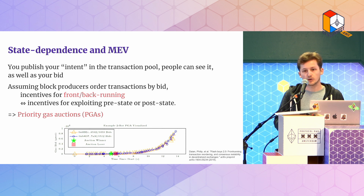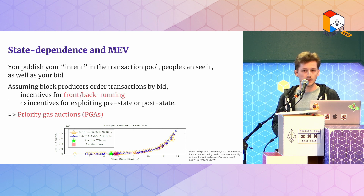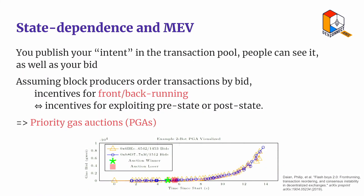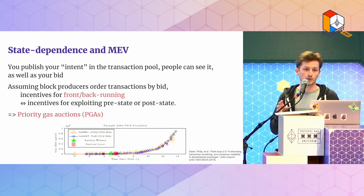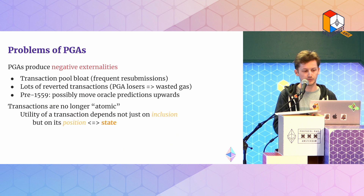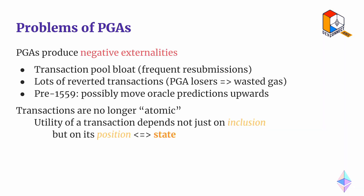Basically, there are incentives to exploit either the state that immediately precedes your transaction or the state that immediately succeeds it. This has led to the well-known phenomenon of priority gas auctions, or PGAs. There's a plot from the Flash Boys paper that shows bidding bots competing against one another to be the first to exploit the transaction. This is kind of bad — PGAs have a lot of negative externalities because the bots are replacing transactions a lot, bloating the transaction pool. Multiple bots compete for the same opportunity; only one eventually wins and makes it into the block, but all the others are also in the block but reverted. This is a waste of valuable block space.